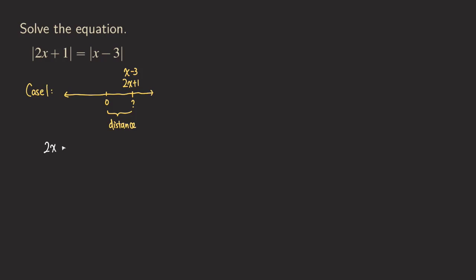We write down the equation: two x plus one is equal to x minus three, because they're equal and have the same distance away from zero. We solve this by subtracting x from both sides and subtracting one, so we can get all the x terms on one side and all the numbers on the other. Two x minus x gives x on the left side, and negative three minus one gives negative four on the right. So x equals negative four is one solution.